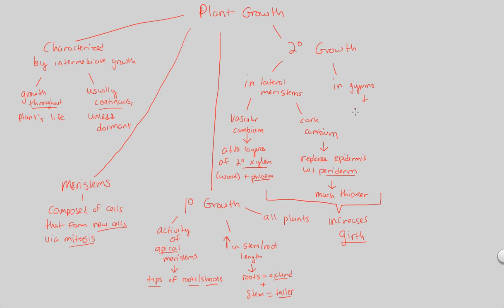Secondary growth is also seen in other woody angiosperms — trees with very big, wide structures that are tall as well, so they do primary growth and also continue on with secondary growth. The result of secondary growth — this secondary xylem and phloem, and the periderm — is essentially wood and bark. Trees that have wood and bark underwent secondary growth in their lateral meristems to grow outwards and increase in girth.